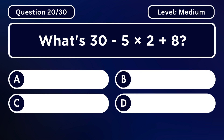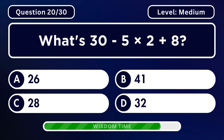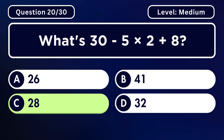What's 30 minus 5 multiplied by 2 plus 8? Answer C. 28.